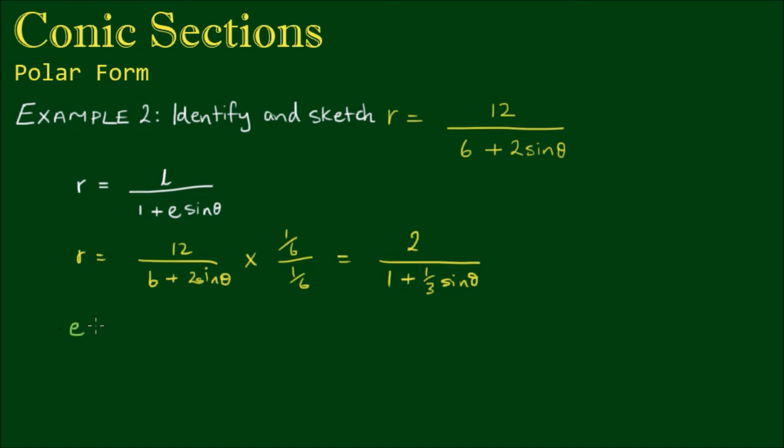So from here, the eccentricity, which gives us the type of conic section, is equal to one third. So we note that the eccentricity is between 0 and 1. So this means that we have an ellipse. And the ellipse will have a focal point at the pole. And because we have a sine theta instead of a cosine theta, it will be orientated vertically.